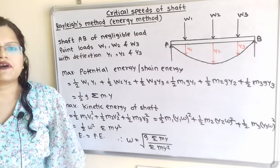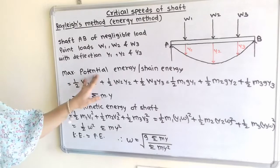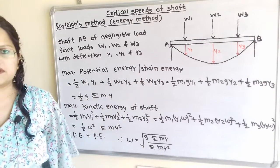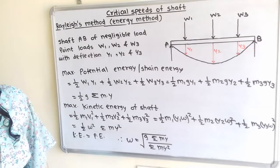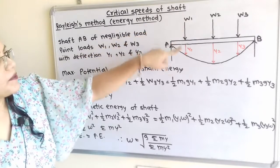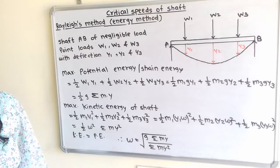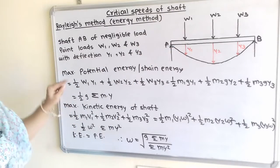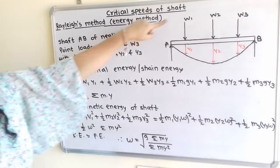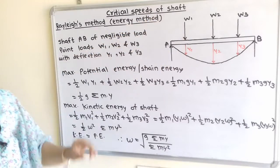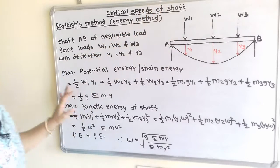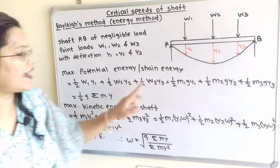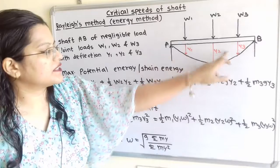Now we will first calculate the maximum potential energy, also known as the strain energy. We have point load W and deflection Y. So maximum potential energy is equal to half multiplied by W multiplied by Y. So for W1, Y1 we will write half W1 Y1, plus half W2 Y2, plus half W3 Y3.